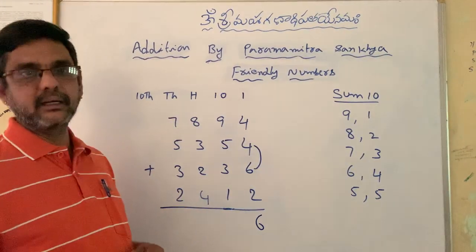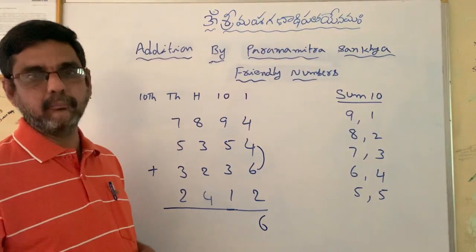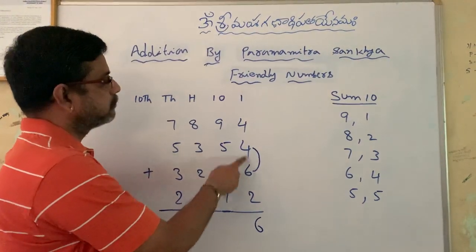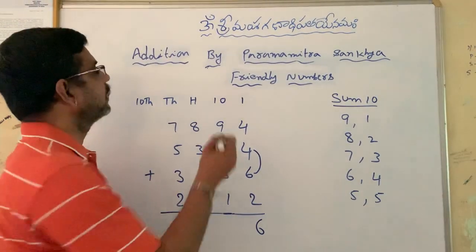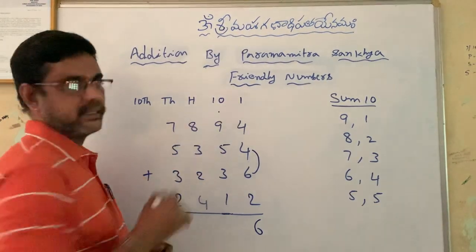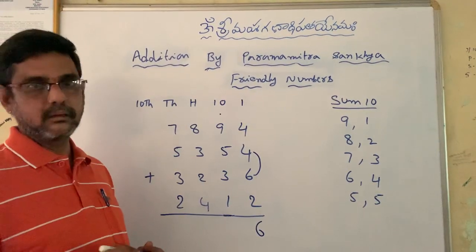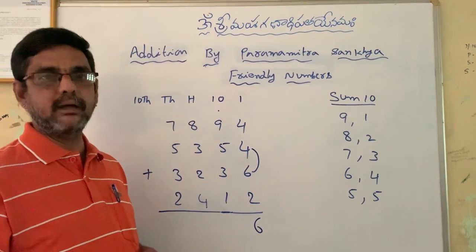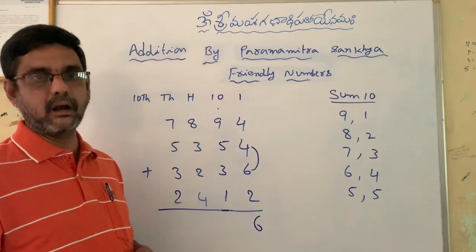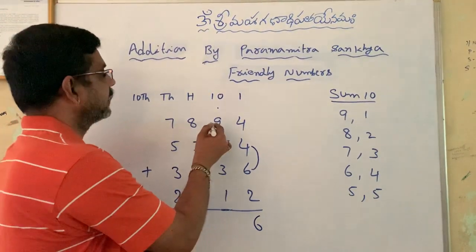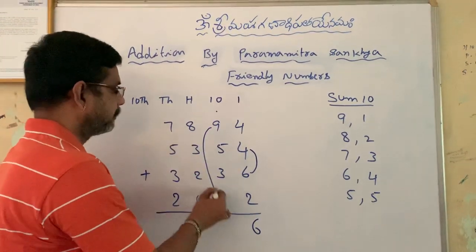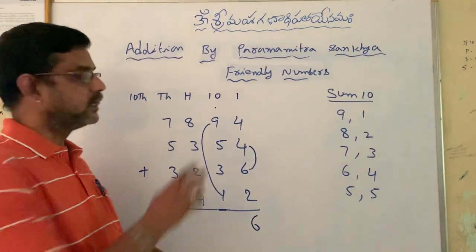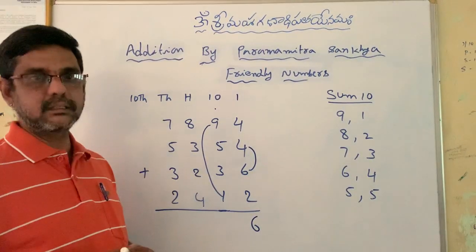Now come to the second column — the tens place column. The sum of these two numbers is 10, so put a dot at the tens place. Now verify whether there is any friendly number in the second column: we have 9 and 1, both are friendly numbers.